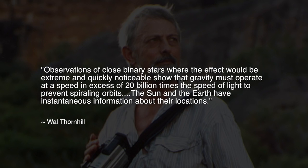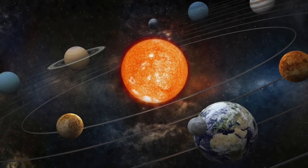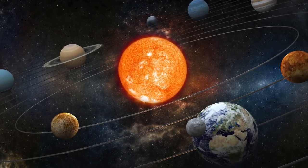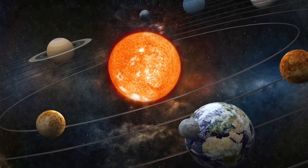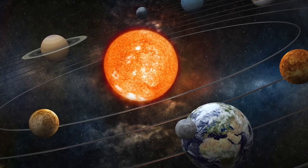Observations of close binary stars where the effect would be extreme and quickly noticeable show that gravity must operate at a speed in excess of 20 billion times the speed of light to prevent spiraling orbits. The Sun and the Earth have instantaneous information about their locations. In this Space News episode, Bishop Nicholas Sykes elaborates the fundamental differences in this regard between the Electric Universe and Standard Cosmology.